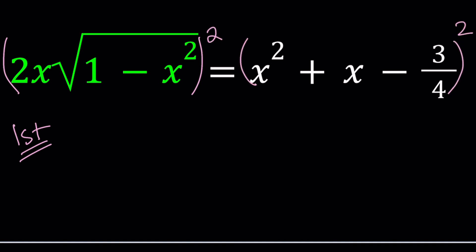If we square both sides, we get 4x squared multiplied by 1 minus x squared. The radical disappears. And on the right-hand side, we have something like a plus b plus c squared. I can use the formula a squared, b squared, c squared, and then 2ab, 2ac, and then 2bc.